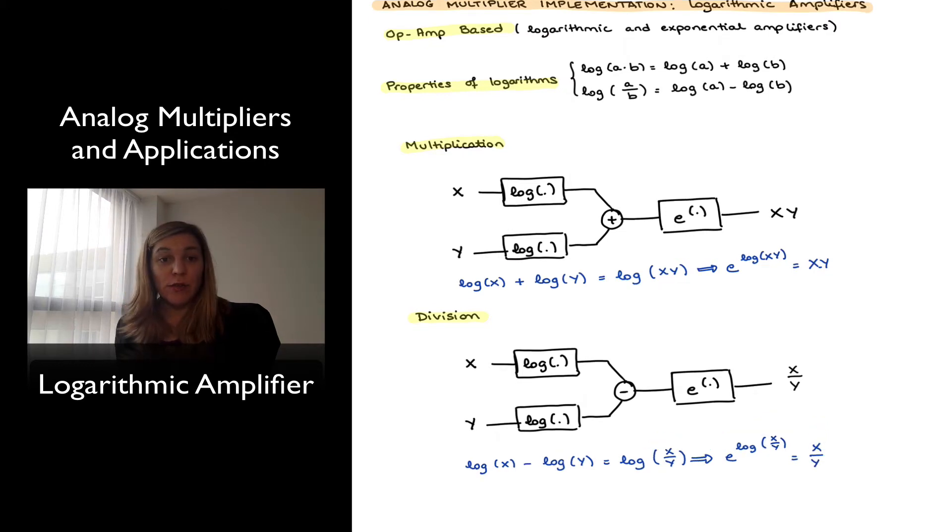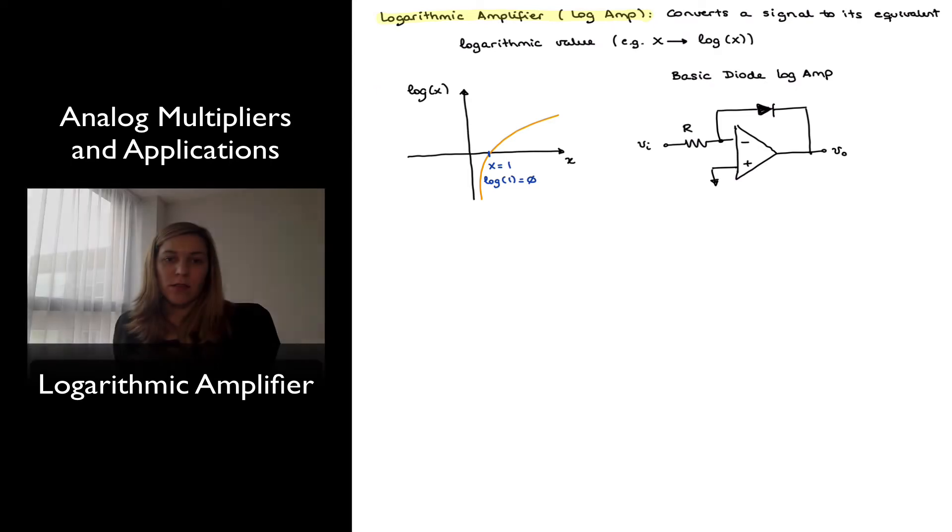Before we get into the implementation of multiplier circuits or divider circuits using logarithm and exponential amplifiers, we're going to be taking a closer look to these two building blocks, the logarithmic and the anti-logarithmic amplifiers. So a logarithmic amplifier, or log amp, is essentially a circuit that converts an input signal to its equivalent logarithmic value. So the input to the circuit will be a signal x, the output will be proportional to the logarithm of x. I've represented the mathematical function on the left-hand side, and a circuit that implements the logarithmic function on the right-hand side.